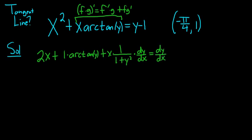And this is equal to dy dx. The derivative of 1 is 0, so everything looks okay. Now you could solve for dy dx, but it's actually easier if you plug in numbers. So here x is negative pi over 4 and y equals 1. We'll do that then solve for dy dx.